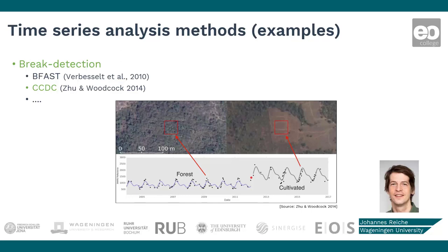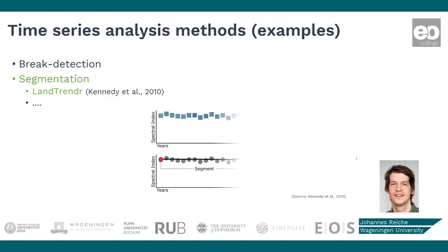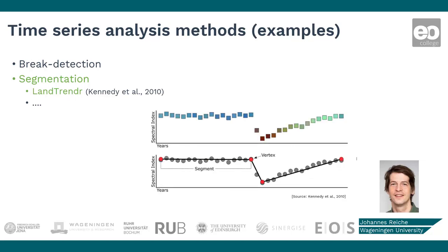Here an example from CCDC, where we see a Landsat time series of a forest pixel that is logged and converted into agriculture. The blue and black line represent the modeled seasonality. The red point represents the breakpoint, which indicates the time of change.